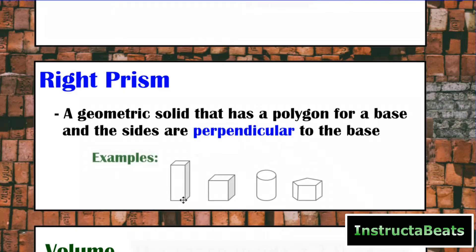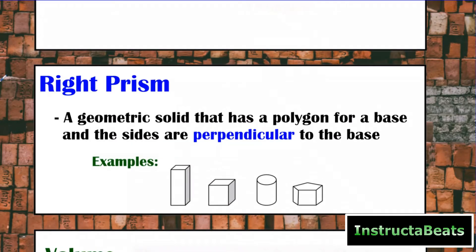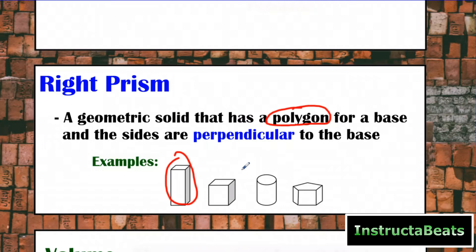Here are some examples of different three-dimensional shapes. Now to be a polygon, you have to be a closed figure with straight sides — really straight sides. We are looking for any three-dimensional object that has a polygon for a base and then the sides are perpendicular or form a right angle. This is a right prism; as a matter of fact, this is a right rectangular prism. We've already done a lesson on how to find the volume for that. This is a cube — same thing. It has a square for a base, which is a polygon, and the sides form a right angle to that base. You can kind of see that right angle right here.